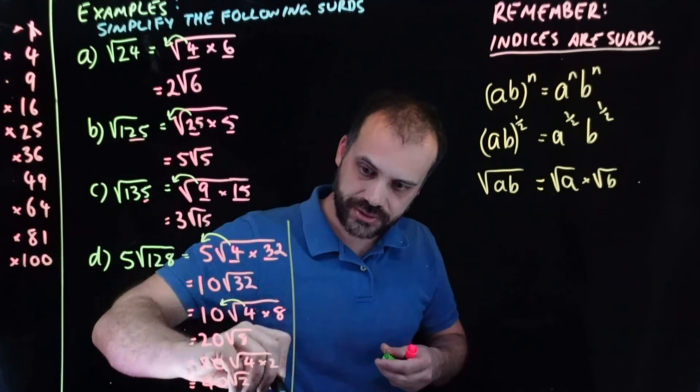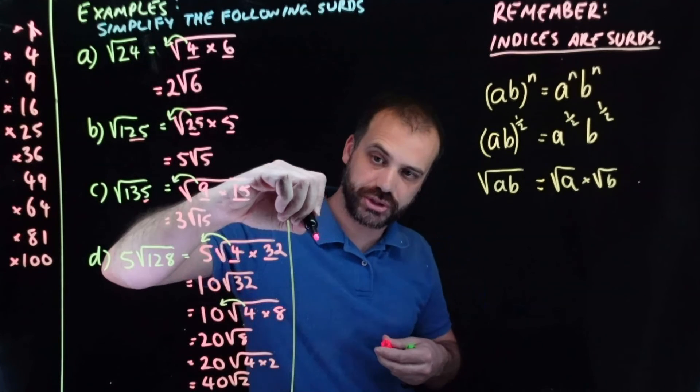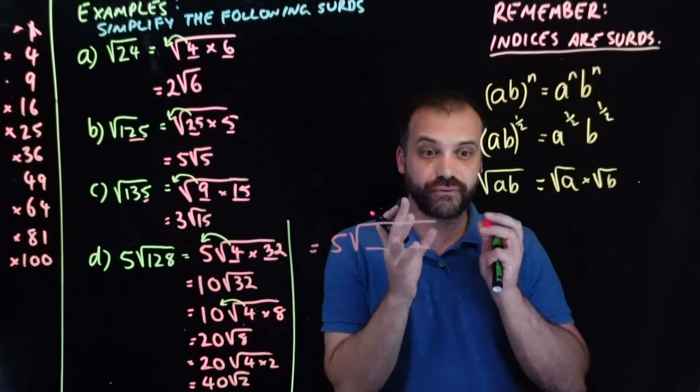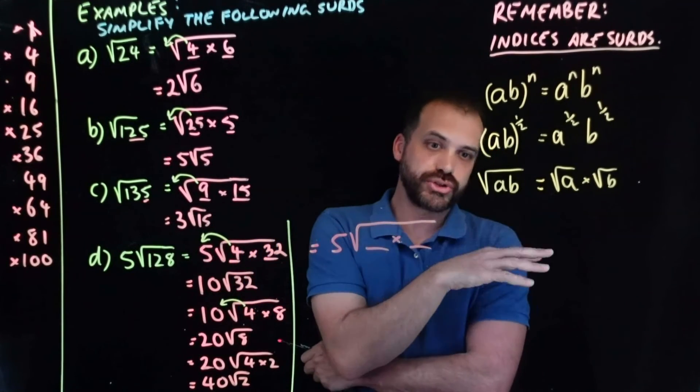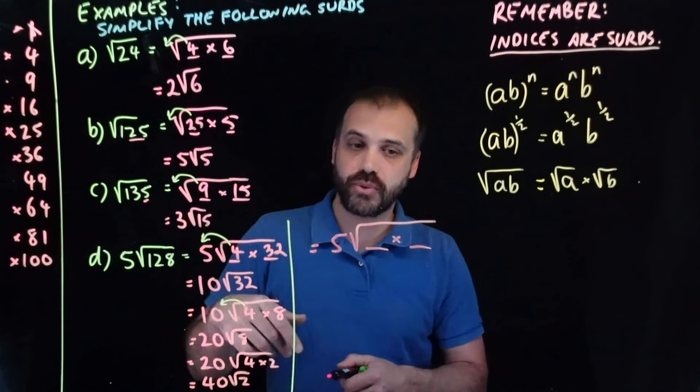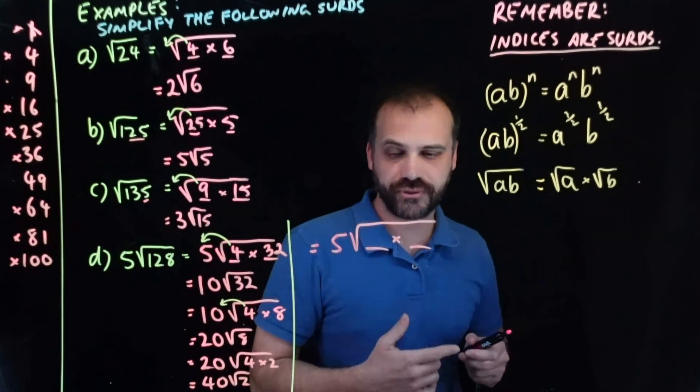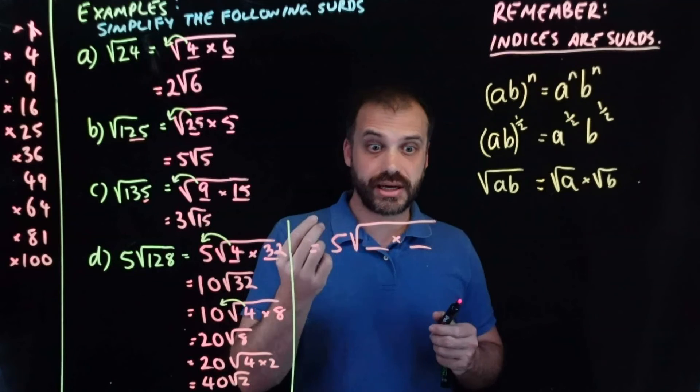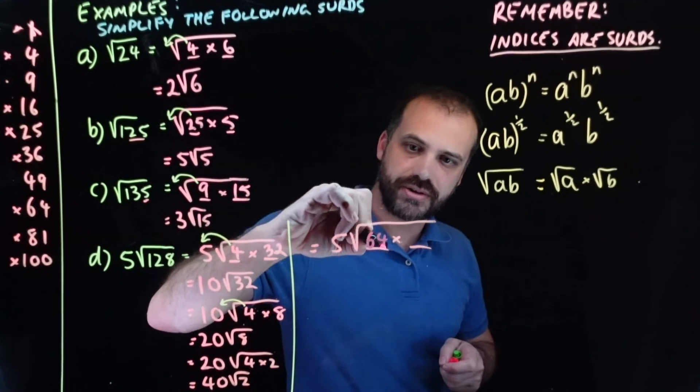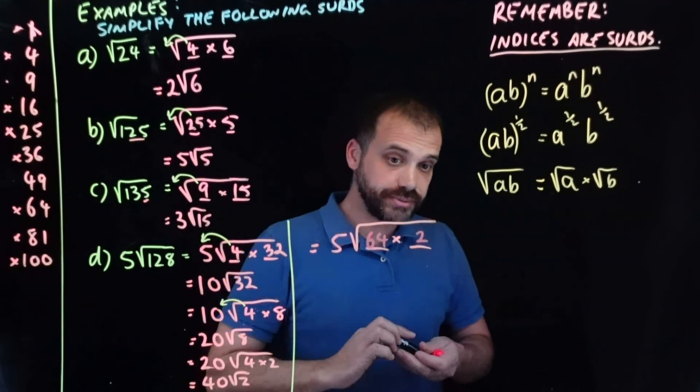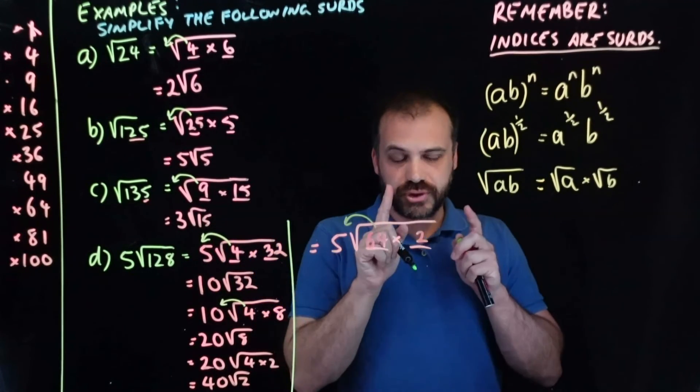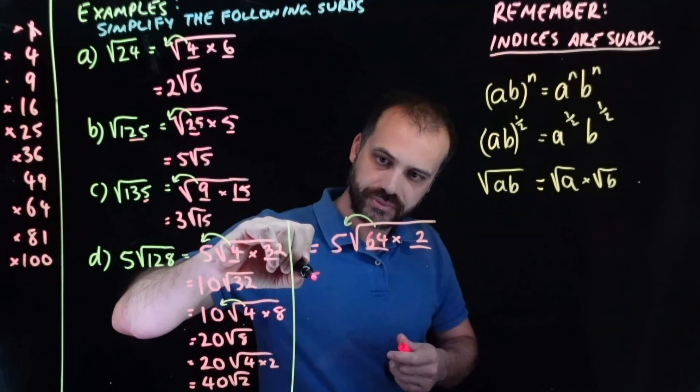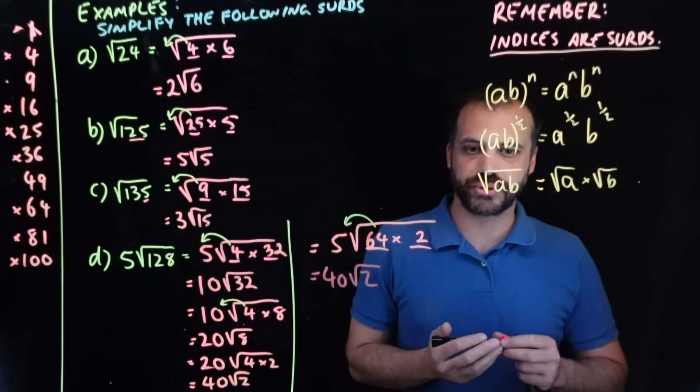We have 5, root. Let's start from the bottom. Does 100 go into 128? No, too big, it's more than half of 128. 81? No, 81 doesn't go into 128, it's more than half. 64? Hmm, wait a minute. 64 times 2 is 128. 64 times 2. And then, we see this 64, we can bring it out, the square root of 64 is 8, 8 times 5 is 40. Root 2. And then we're done.